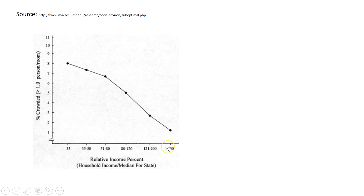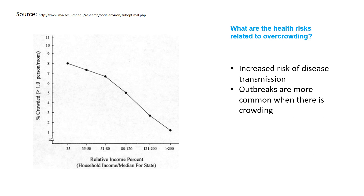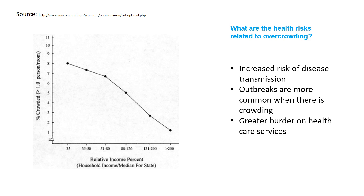Income is also related to crowdedness. The wealthier a community or a family, the less likely they are to perceive themselves to be crowded. We measure crowdedness as more than one person per room in a given house. As health scientists, we care about crowdedness because there are certain risks associated with overcrowding — among them, in a crowded dense population, we have an increased risk of disease transmission, particularly infectious diseases. Outbreaks are more common where there's more crowding, and there's a greater burden on healthcare services, meaning people are less likely to receive the care they need in good time.